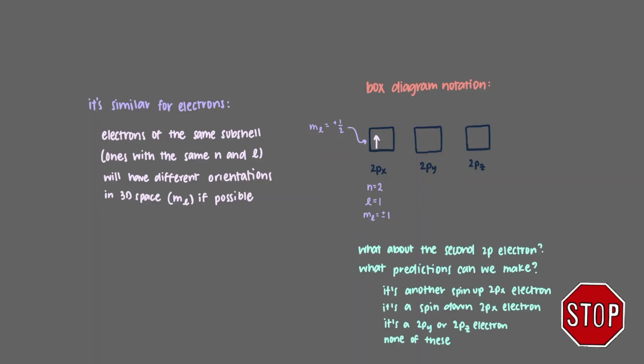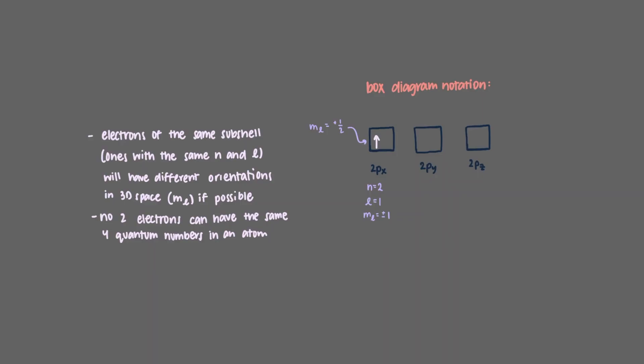So what about the second 2p electron? What predictions can we make about it? As we know, no two electrons can have the same four quantum numbers in an atom. That means that the second electron cannot be another spin-up 2px electron, so that's not possible. The other two scenarios are both at least possible, but the correct answer is that it will be a 2py electron or a 2pz electron, but let's pick 2pz. Also, this second electron will also be spin-up. This is Hund's rule.